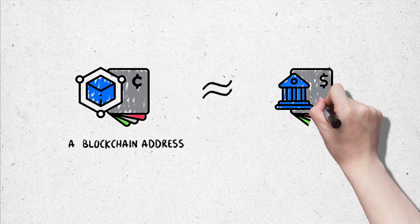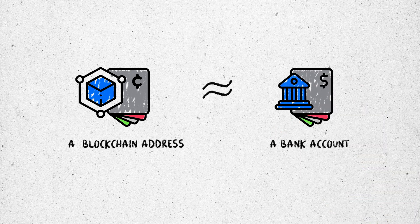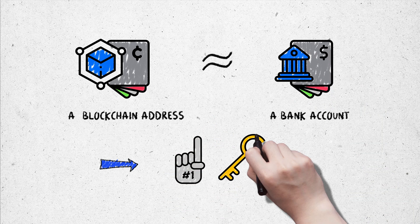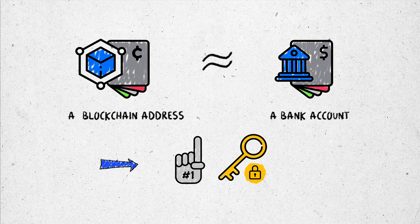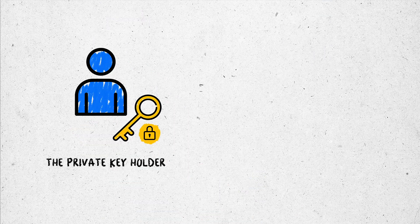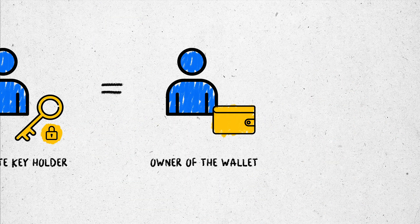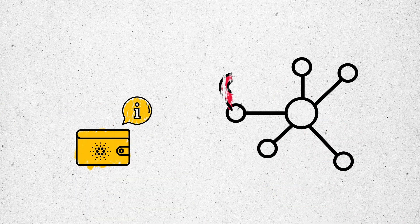A blockchain address is similar to a bank account for a crypto asset. It is created from a private key, and the private key holder is the owner of assets stored in the address. Basically, the address denotes a specific position on the network, which is the place for sending crypto assets or information.